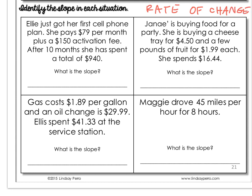In the first scenario, Ellie just got her first cell phone plan. She pays $79 per month plus a $150 activation fee. After 10 months, she has spent a total of $940. What is the slope? We have three pieces of information: $79 per month, a $150 activation fee, and a total of $940. But we're looking for the rate — in this scenario, there's only one rate: $79 per month. So each month, the rise is $79.